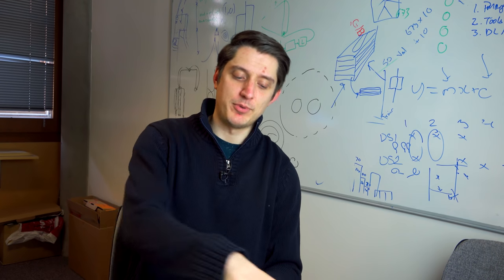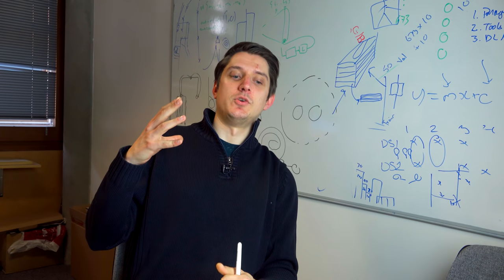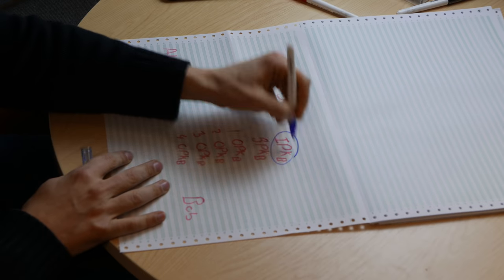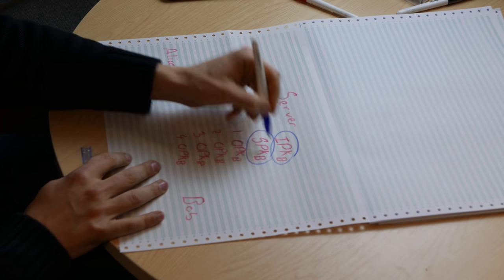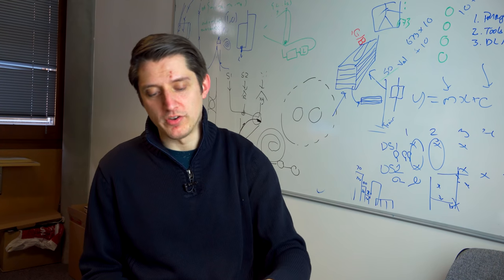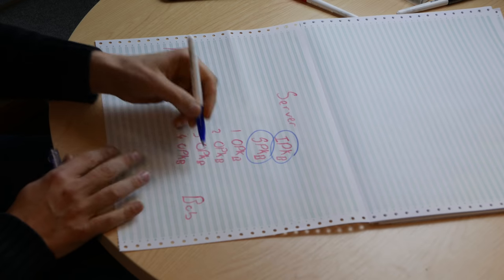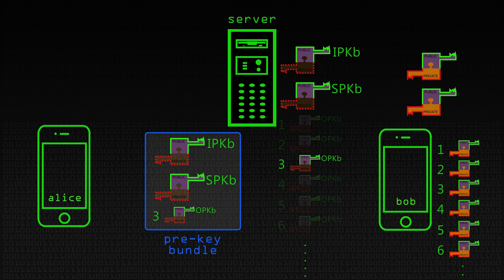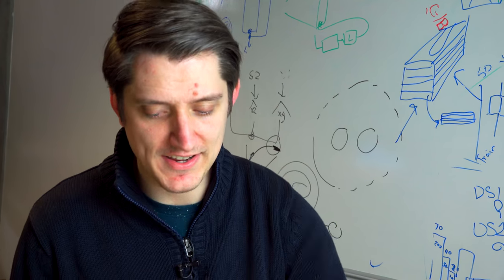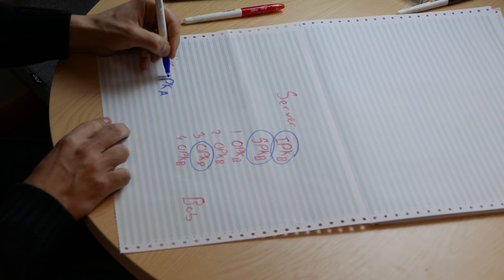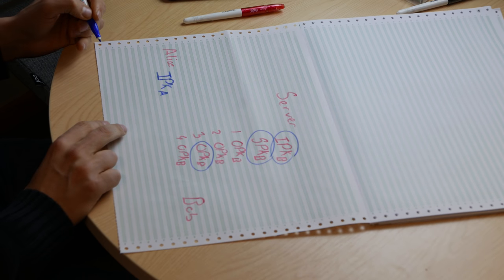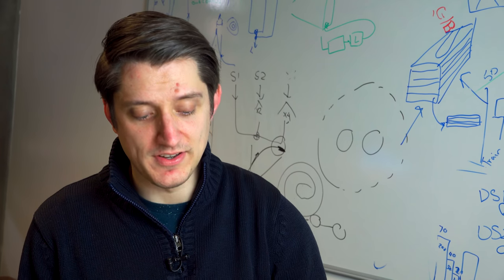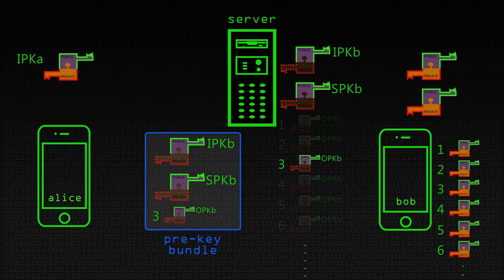This is a set of parameters from Bob that she can use to form a communication. So the server is going to send to Alice Bob's identity key, Bob's signed pre-key, and one, either at random or sequentially, of these one-use keys. Let's say number three. Alice is going to be sent three different public keys from Bob. Alice is going to generate an identity key of her own for Alice, and she's going to generate an ephemeral key, which is like a one-use session key, very common in Diffie-Hellman for herself.